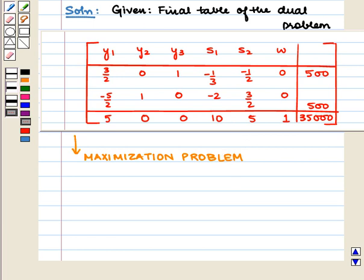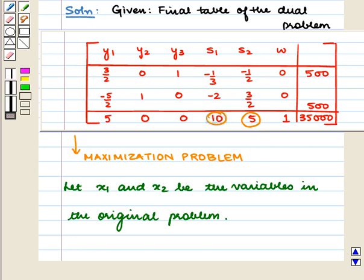In the dual problem, the last row corresponding to the objective function w will give the solution of the original minimization problem. The values corresponding to the slack variables will give the values of the variables in the original problem. Here, let x1 and x2 be the variables in the original problem.